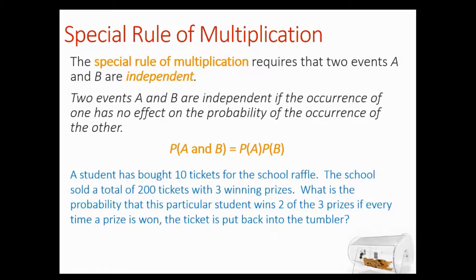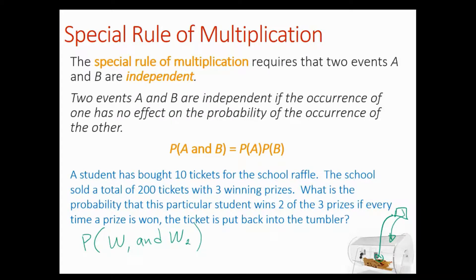A student has bought ten tickets for the school raffle. The school sold a total of 200 tickets and they have three winning prizes. What is the probability that this particular student wins two of the three prizes that the raffle has, if every time a prize is won the ticket is put back into the tumbler? So what is the probability that the student wins the first raffle and the second raffle as well? They replace the ticket each time. The student has ten tickets out of 200, and 'and' means multiplication.